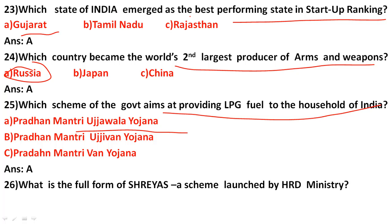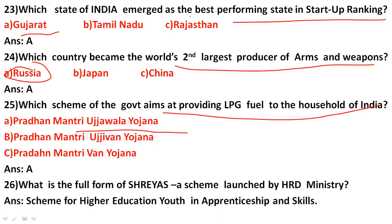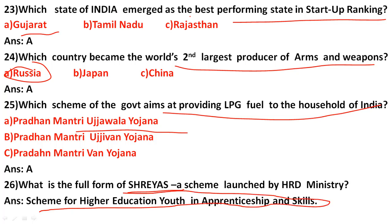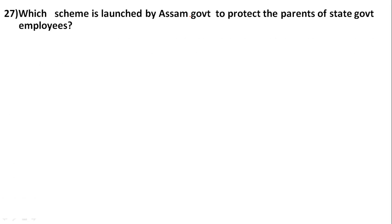The full form of SHREYAS is Scheme for Higher Education Youth in Apprenticeship and Skills — focused on higher education and skills development. Recently the government of India also launched a tourism scheme. Which scheme is launched by the Assam government to protect the parents of state government employees?